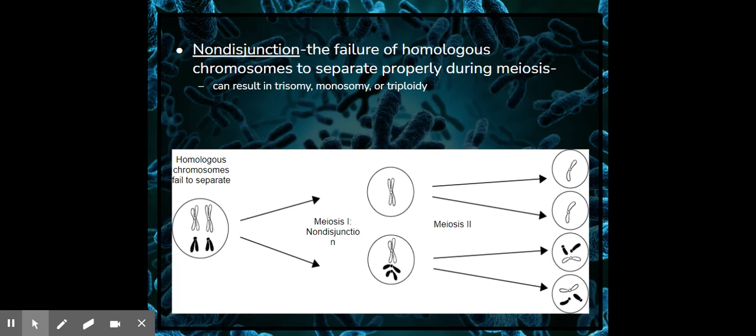Now, nondisjunction. Nondisjunction is the failure of homologous chromosomes to separate properly during meiosis. So all of these could be nondisjunctions: trisomy, monosomy, and triploidy.